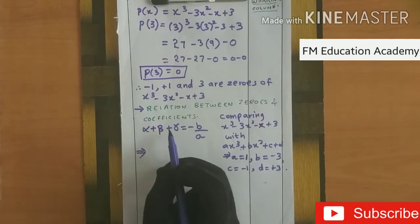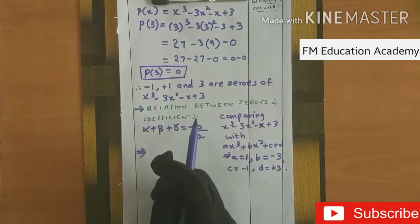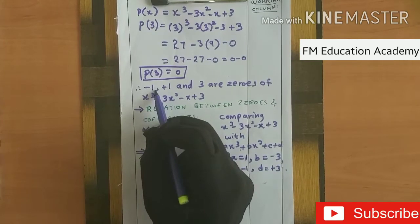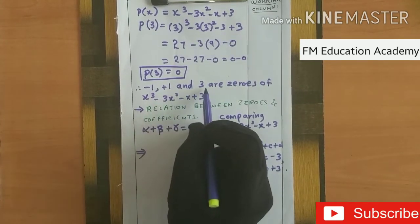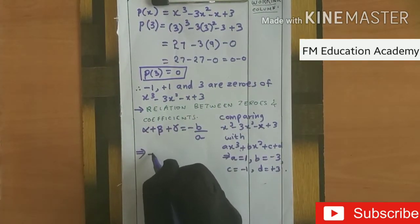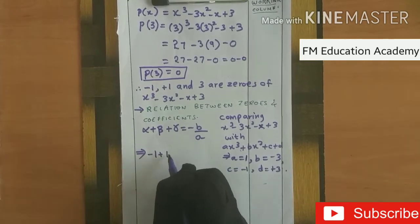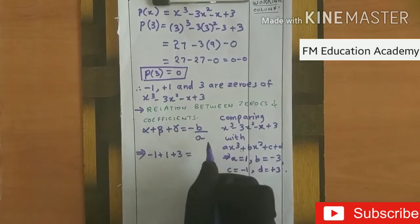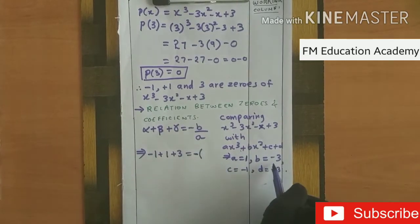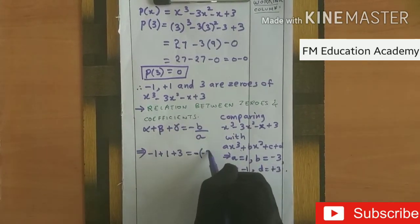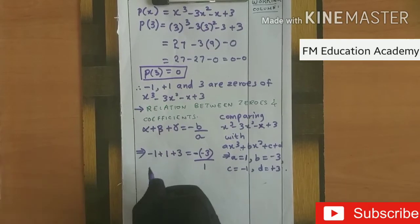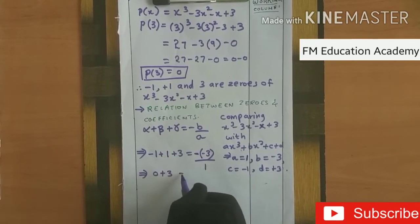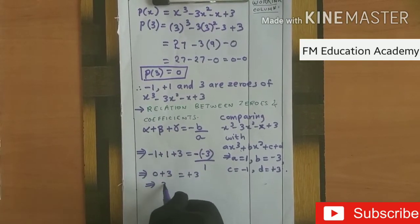For the sum of zeros, the formula is alpha plus beta plus gamma equals minus b by a. Substituting: minus 1 plus 1 plus 3 equals minus (minus 3) divided by 1. Minus 1 plus 1 gives 0, and 0 plus 3 gives 3. On the right side, minus b over a equals minus (minus 3) over 1 equals 3. So 3 equals 3; LHS equals RHS.